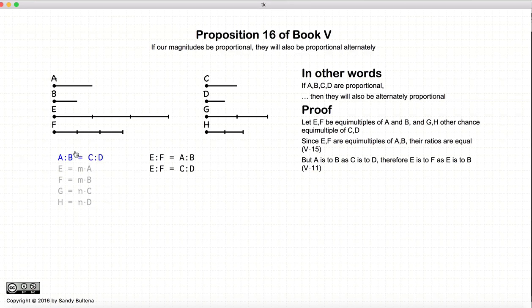Now A to B is equal to C to D. So if these two ratios are equal, and the two ratios E to F and A to B are also equal, that gives us that the ratio E to F is equal to the ratio C to D. And that's just by substituting A to B with C to D.